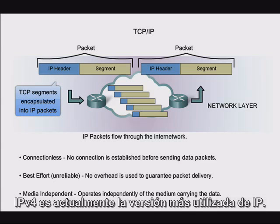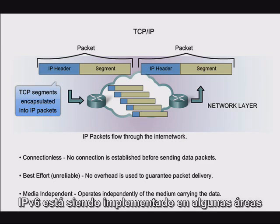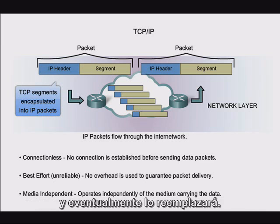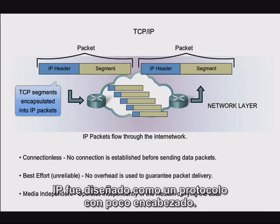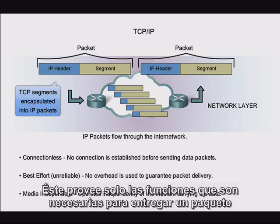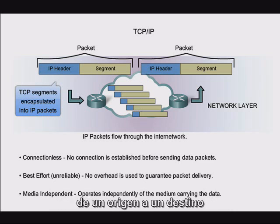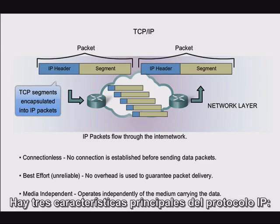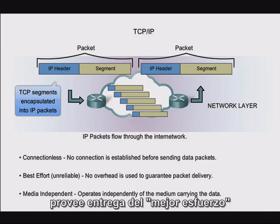IPv4 is currently the most widely used version of IP. IPv6 is being implemented in some areas and will operate alongside IPv4, and eventually it will replace it. IP was designed as a protocol with low overhead. It provides only the functions necessary to deliver a packet from a source to a destination over an interconnected system of networks. There are three main characteristics of IP protocol: it is connectionless, provides best effort delivery, and is media independent.